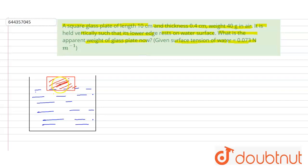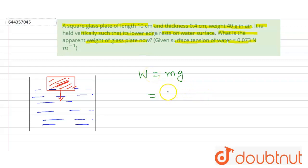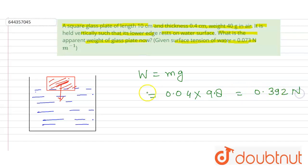The weight of the glass plate acts in the downward direction. Weight W = m × g, where m is given as 40 grams, which we convert to kilograms: 0.04 kg. So W = 0.04 × 9.8 = 0.392 newtons. This is the weight of the glass plate.